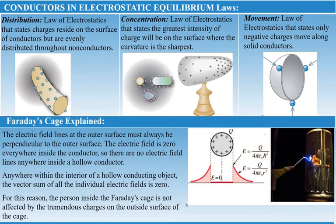This is true for a uniform conductor. But if the conductor is not uniform — as shown in the second picture — the excess charge on a non-uniform conductor becomes most concentrated at the location of greatest curvature. Where the surface is sharpest, more charge is distributed there than on flatter areas.